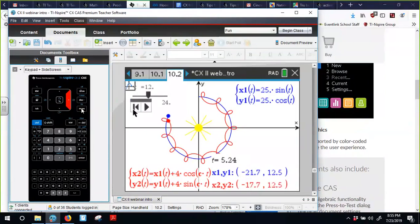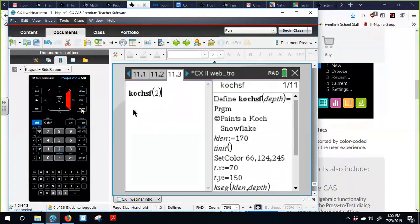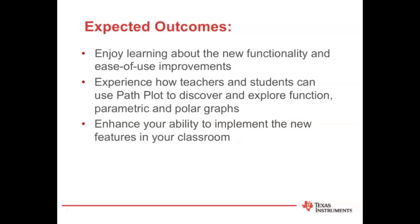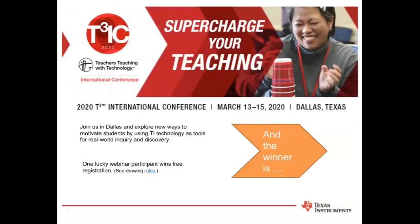Those are some of the nice new features to play with in path plot. If you get the CX2, there are also great drawing functionalities available — for example, fractals. Let me pass it back over to Mike. Thanks so much, Sean and Daniel, for everything you shared. I'm really excited that the T-Cube International Conference is coming to Dallas in mid-March — it seems far away, but it'll be here before you know it.